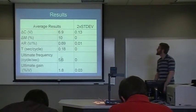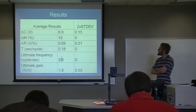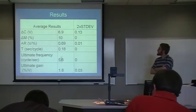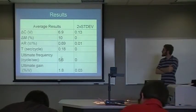Here's the final results. The average of three different periods for the control variable was 6.9 volts. The motor input change was 10%. The amplitude ratio was 0.69.